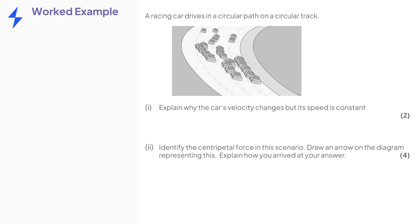OK, let's take a look at a typical two-part question on this topic. A racing car drives in a circular path on a circular track. First, we are asked to explain why the car's velocity changes, but its speed is constant for two marks.